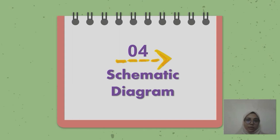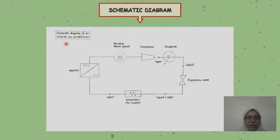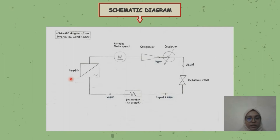My name is Dayana binti Abdurraza, from EK Section 1, Group 1, matrix number 012 010 147. For the PBL project, I will explain the schematic diagram and its components. This is the schematic diagram of an inverter air conditioner. The inverter is used to control the electrical voltage — such as current and frequency — and then it goes to the variable motor speed, which controls the speed.